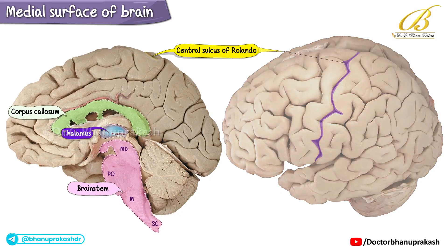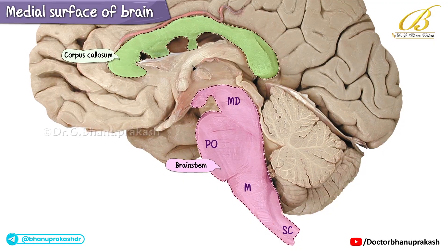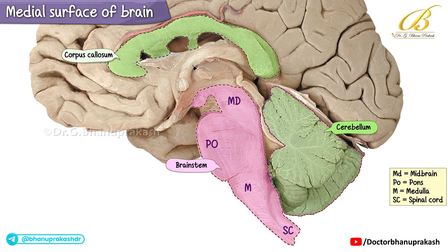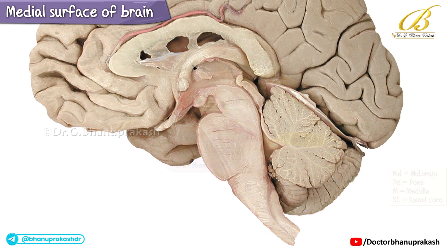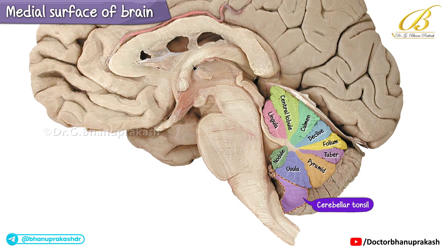Moving posteriorly, we find the cerebellum behind the brainstem and the fourth ventricle. This section cuts through the cerebellum's midline, the vermis, and offers a glimpse of the cerebellar tonsil.